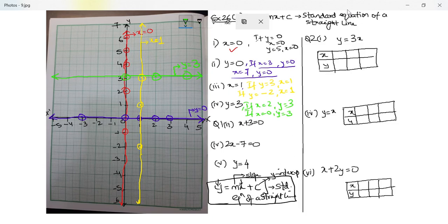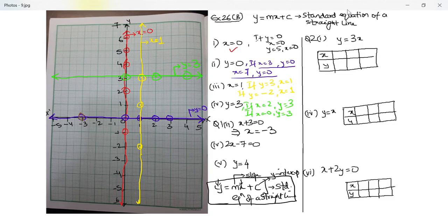Question 26b number one part two: x plus three equal to zero. This means x equal to negative three, so whatever be the value of y, x remains negative three. This line is parallel to the y-axis passing through x equal to negative three. I put an arrow and write x equal to negative three.